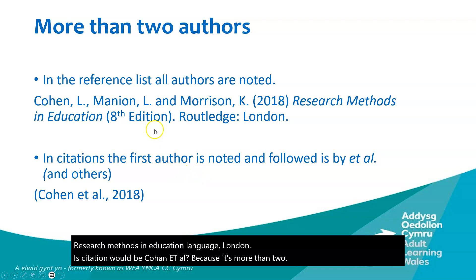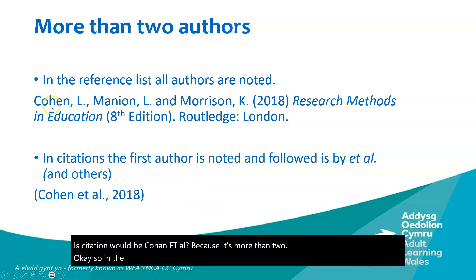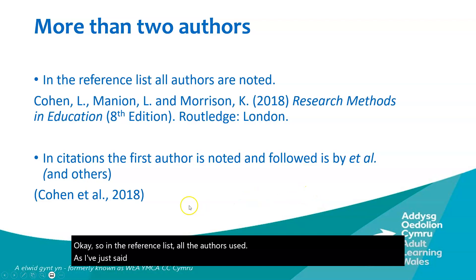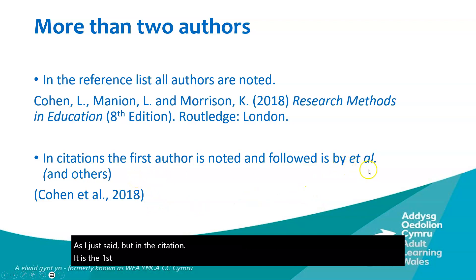In the reference list, all authors are listed. But in the citation, it is the first author followed by et al. — don't forget the dot after 'al'. For example: Cohen et al., 2018.